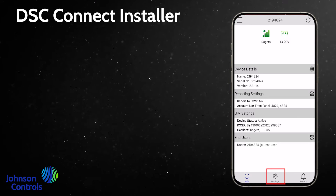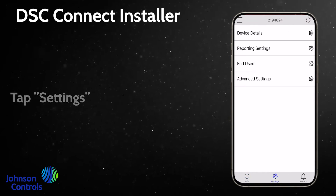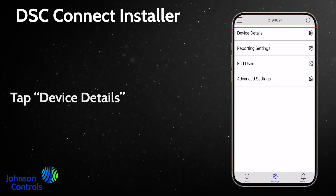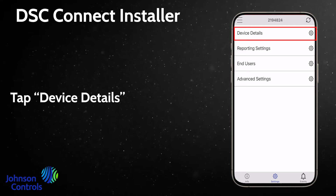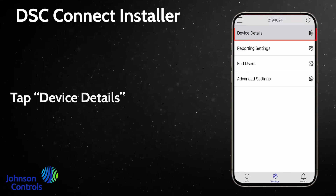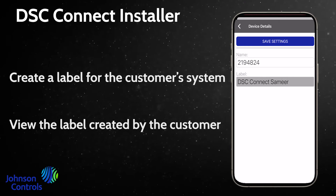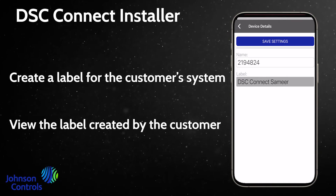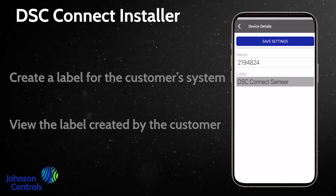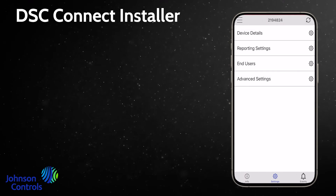Tap Settings, then tap Device Details. Create a label for the customer's system, or view the label created by the customer.